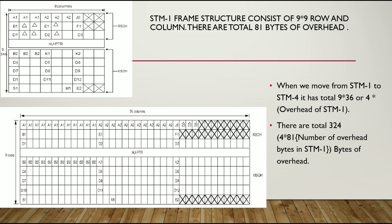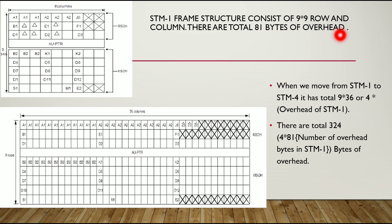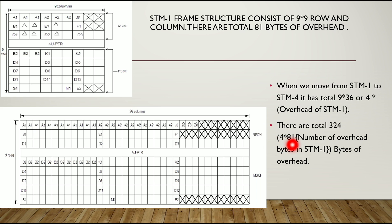You are seeing here this is the frame structure of HTM 1; frame below is the HTM 4 frame structure. In HTM 1 frame structure there are total 9 into 9 rows and there are total 81 bytes of overhead. When we move from HTM 1 to HTM 4, it has total 9 into 36 — and 36 is the number of columns — so there are total 324, which is 9 into 36 and which is equivalent to 4 into 81; 4 times 81 is the number of overheads used in HTM 1.